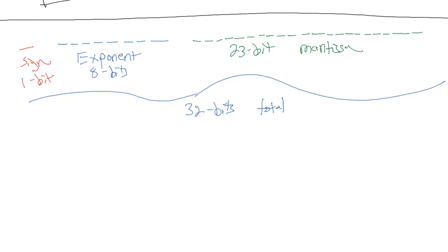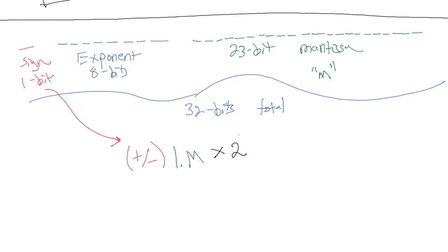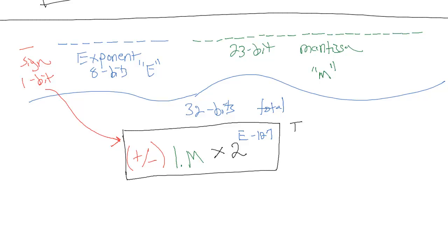Let's go over the definition of how these fields combine. Here's the formal definition: first we have a positive or negative sign from the sign bit, followed by the mantissa — we have an implicit 1, so it's '1 point whatever is in the mantissa field' (call this M) — and it is times 2 to the power of E, which is the exponent, minus 127. This is the IEEE 754 definition for a 32-bit float.